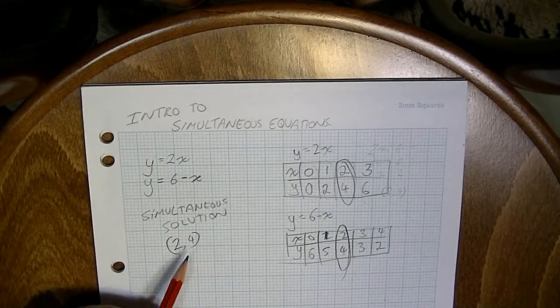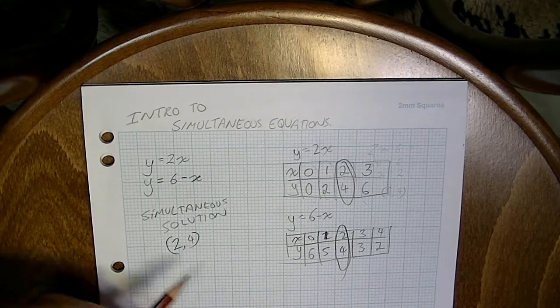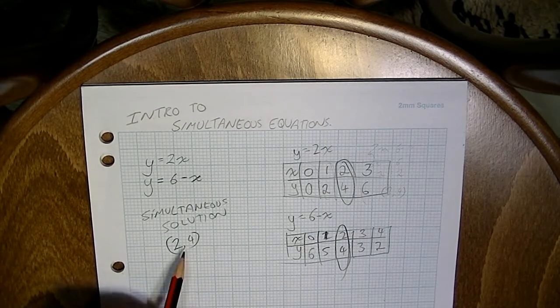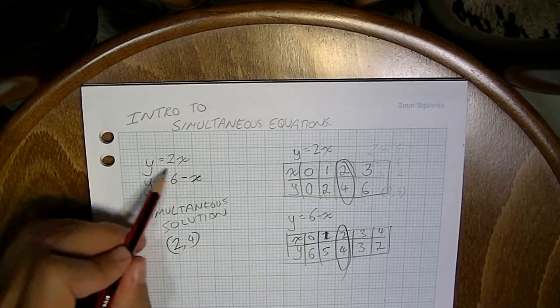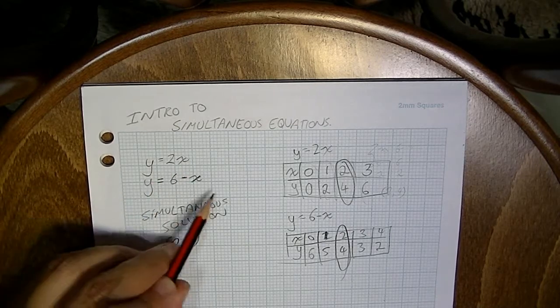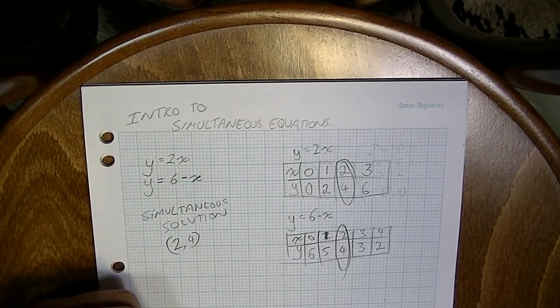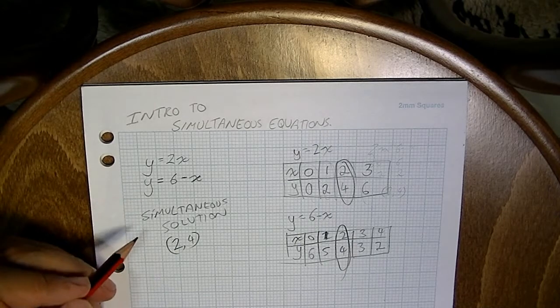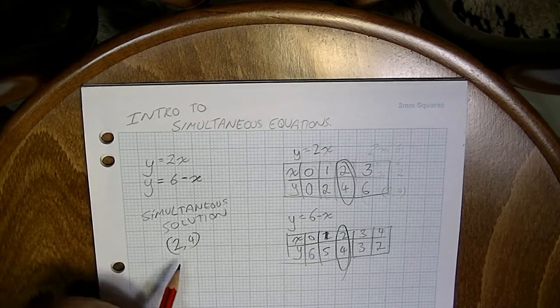The simultaneous solution is a point, a point on a graph. We'll look at graphs in the next video. A point on a graph that works for both this equation and also for this equation. That's simultaneous solutions. In the next videos, we'll be looking at how to calculate this in a number of different ways.